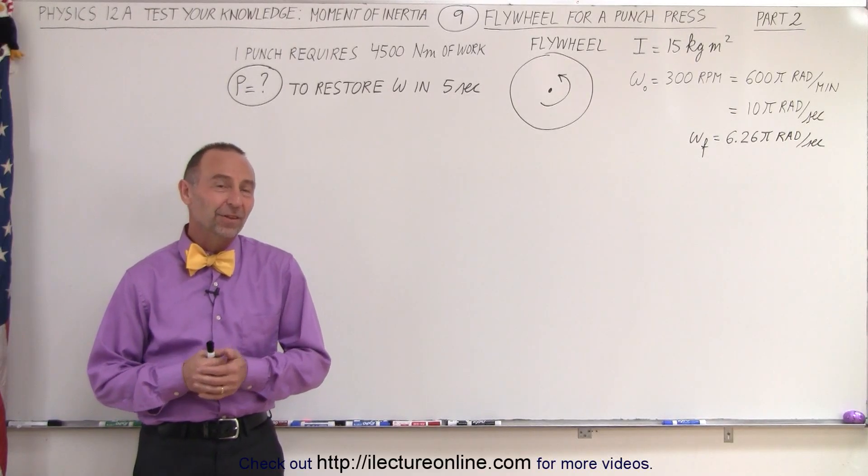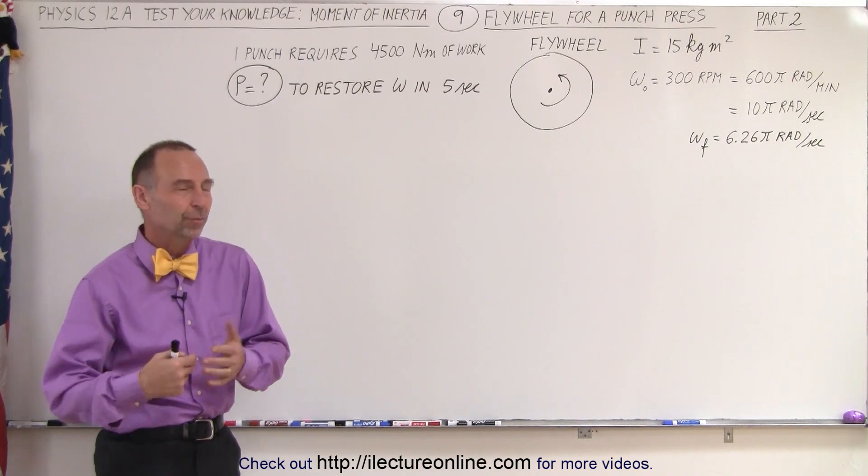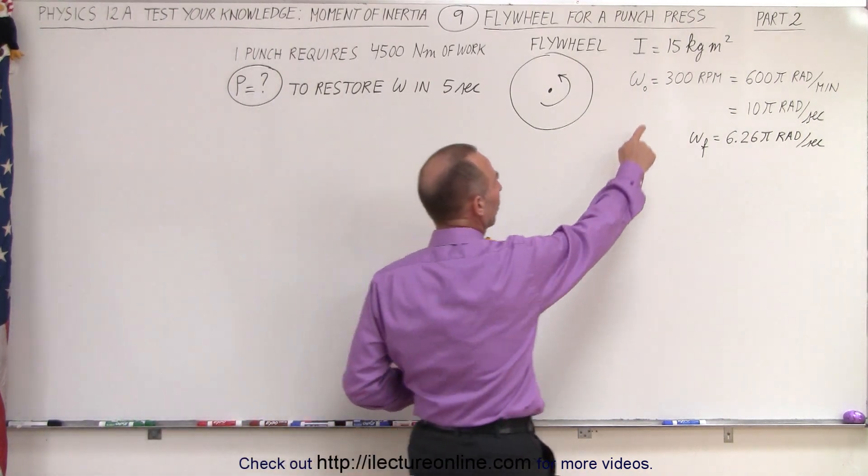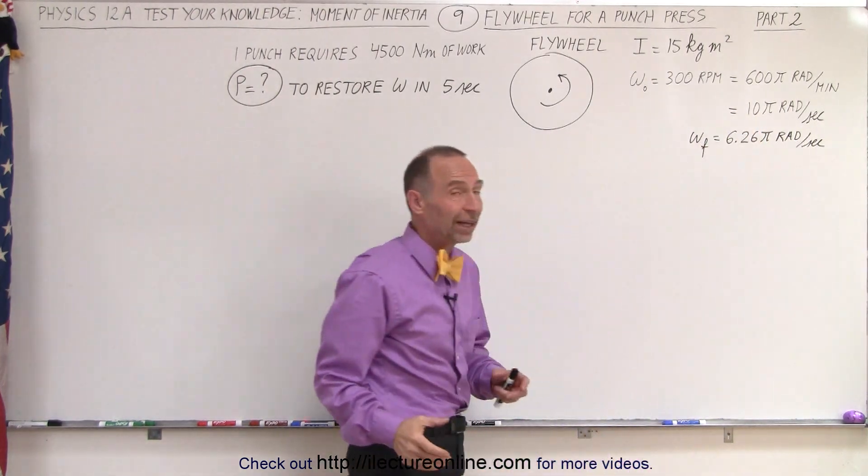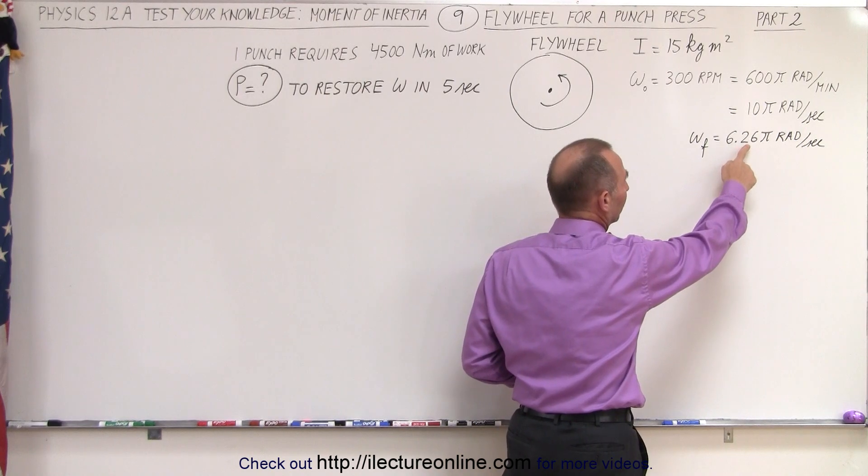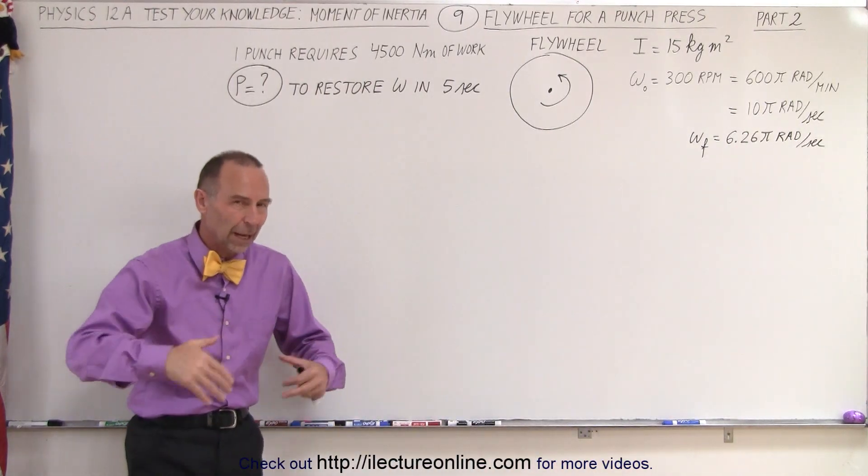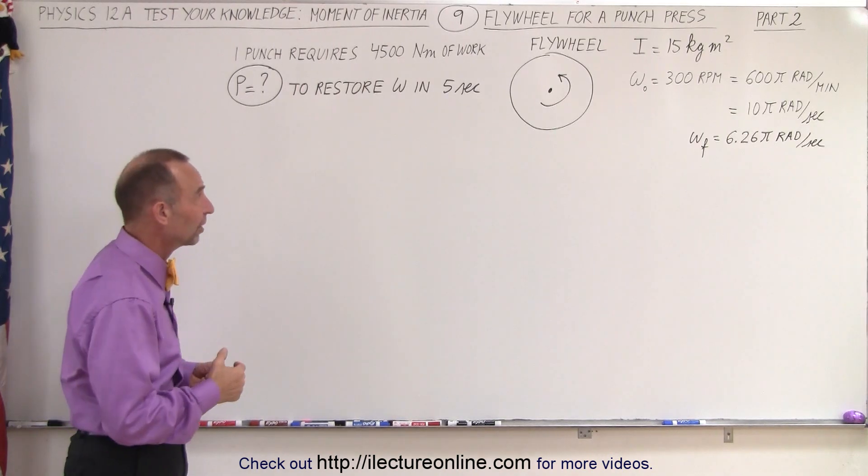Welcome to ElectronLine. The second part to our problem involves bringing the flywheel back up to speed. Notice that the original omega, the angular velocity, was 10 pi radians per second, and the final angular velocity after one punch came down to 6.26 pi radians per second. Now we want to get the flywheel back up to speed, back up to 10 pi radians per second.